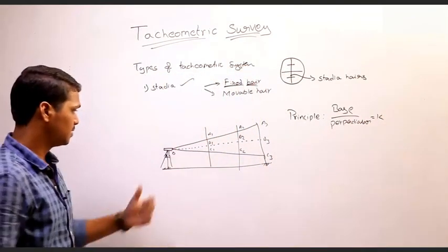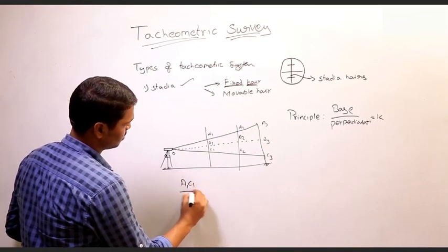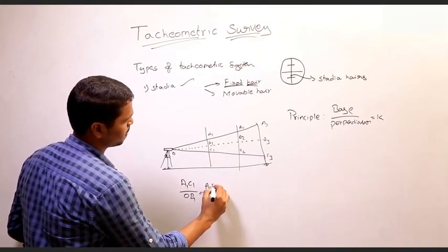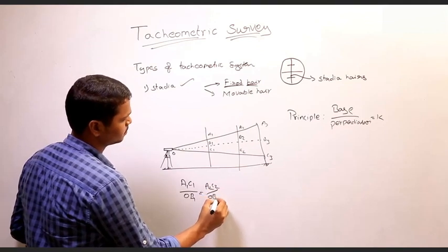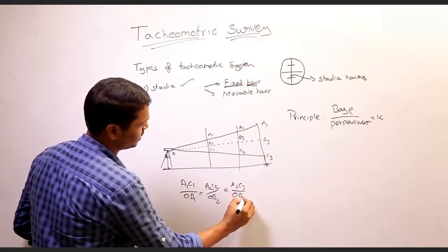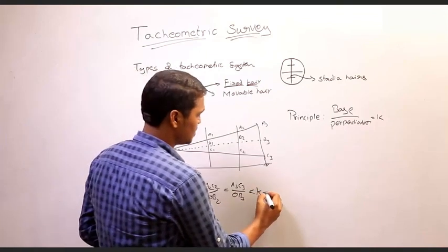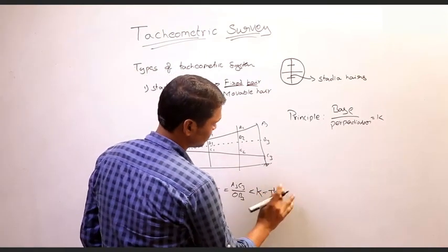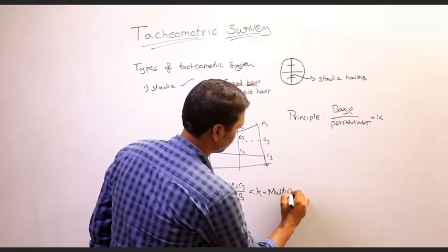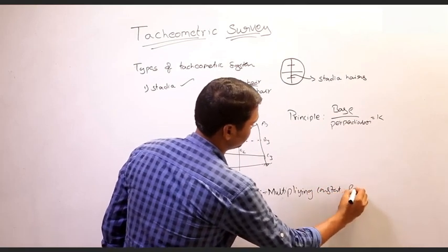So the ratio of base: A1C1 by OB1 is equal to A2C2 by OB2 is equal to A3C3 by OB3, and this ratio is constant. This constant is called the tachymetric multiplying constant, denoted K.